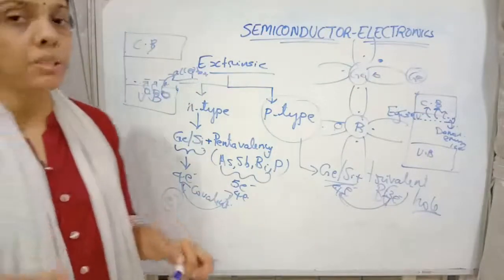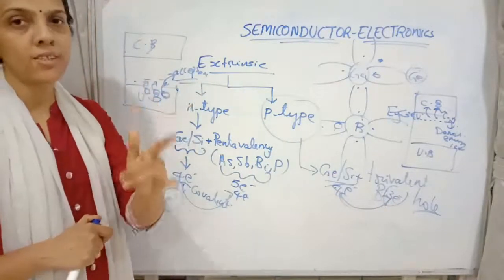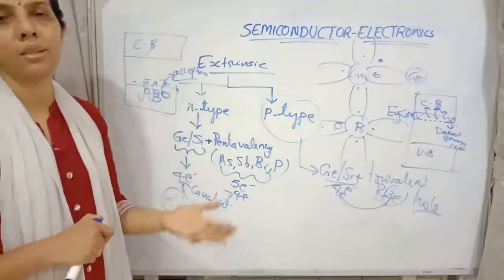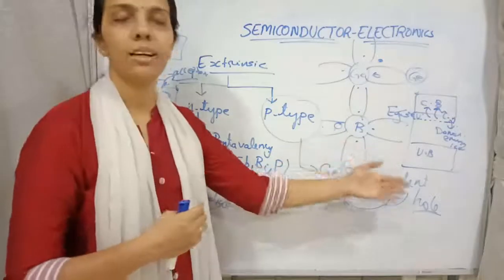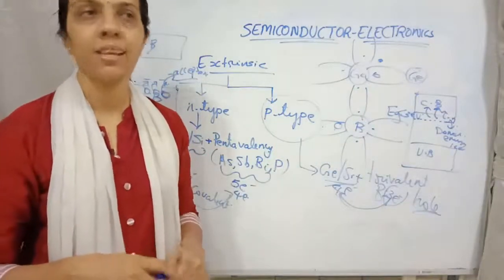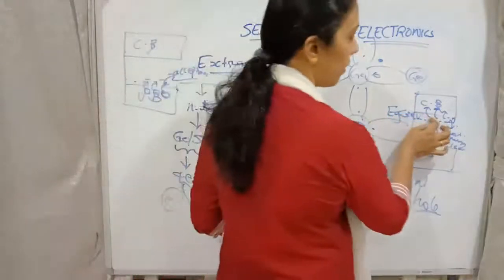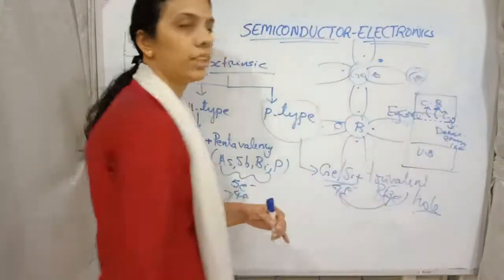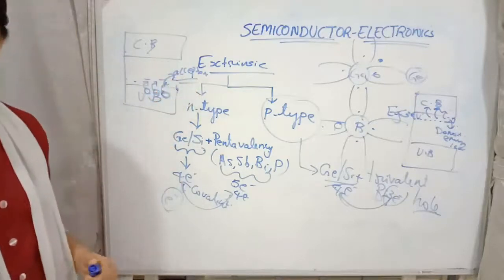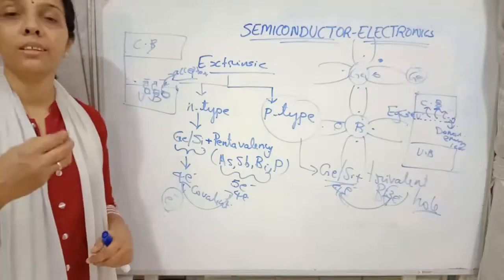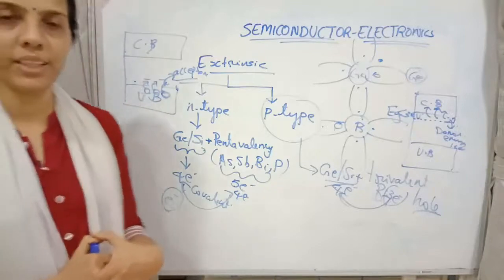To summarize: extrinsic semiconductors are doped semiconductors of two types — n-type and p-type. In n-type, pentavalent impurity provides one extra electron per atom, so electrons are the majority carriers. In p-type with trivalent impurity, holes are the majority carriers. The donor energy level is just below the conduction band, and the acceptor energy level is very close to the valence band.